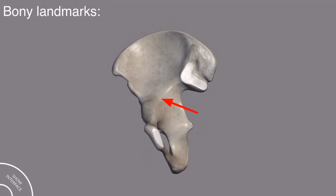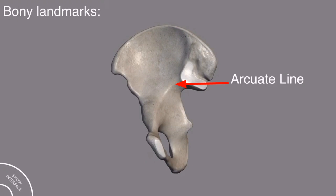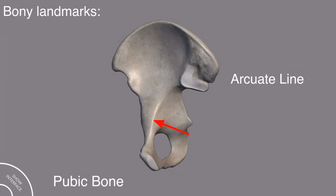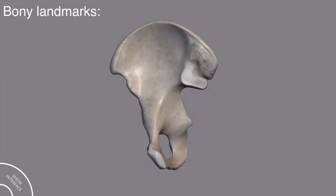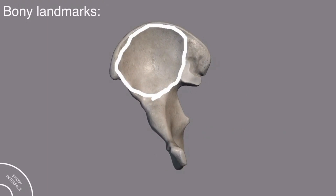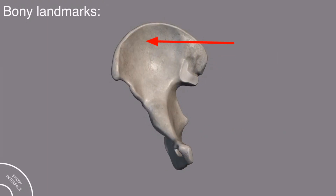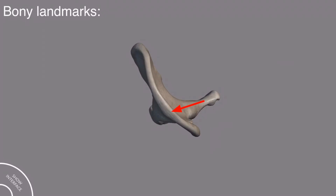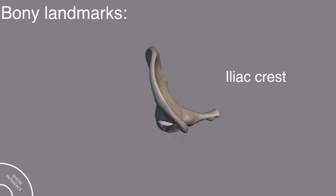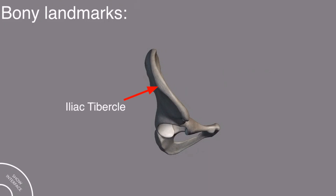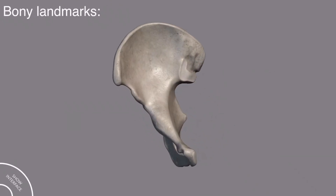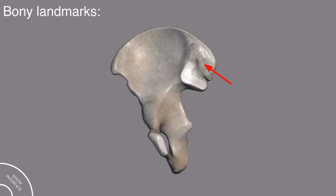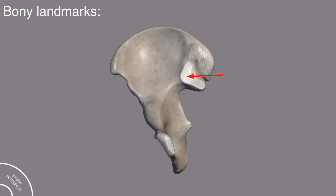This line, you can clearly see, is called the arcuate line, and when this line reaches the pubic bone, it is called the pectineal line. This whole fossa is called the iliac fossa and this is the iliac wing. This is the iliac crest. On the iliac crest, there is a tubercle called the iliac tubercle, and on the inner side, this is called the inner lip.